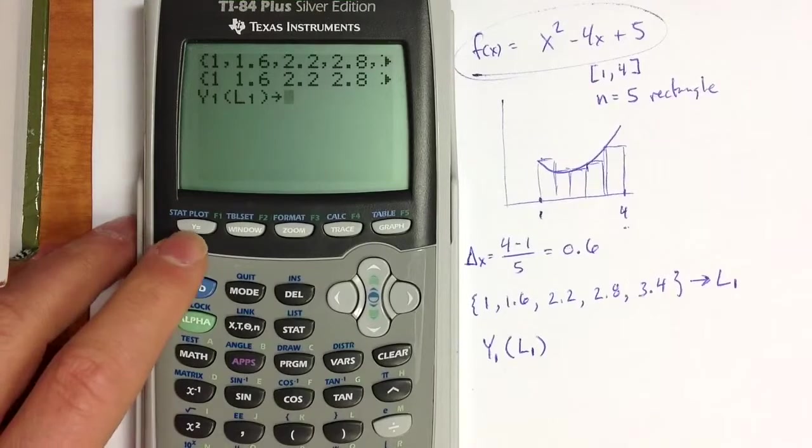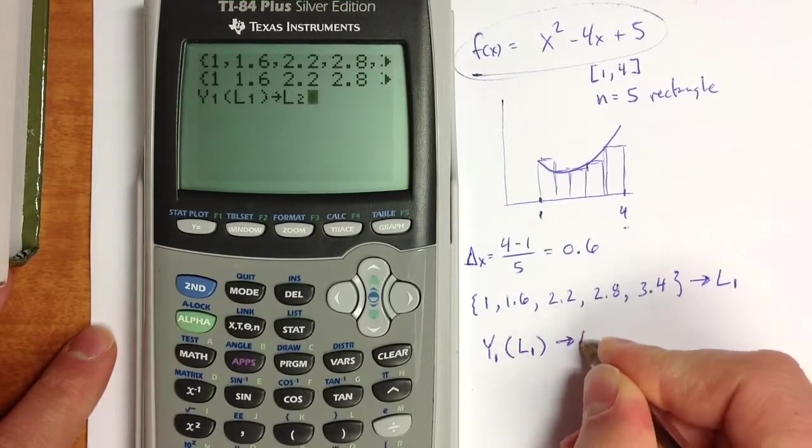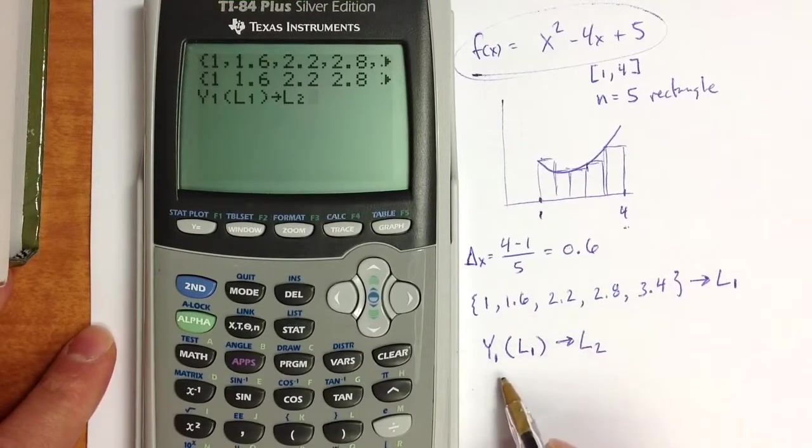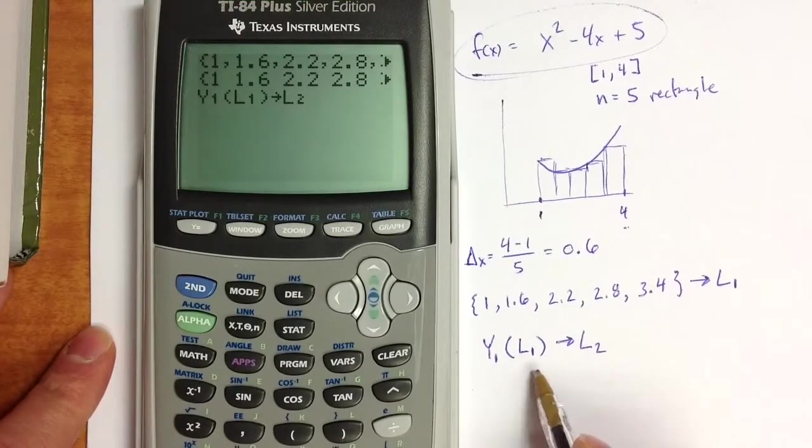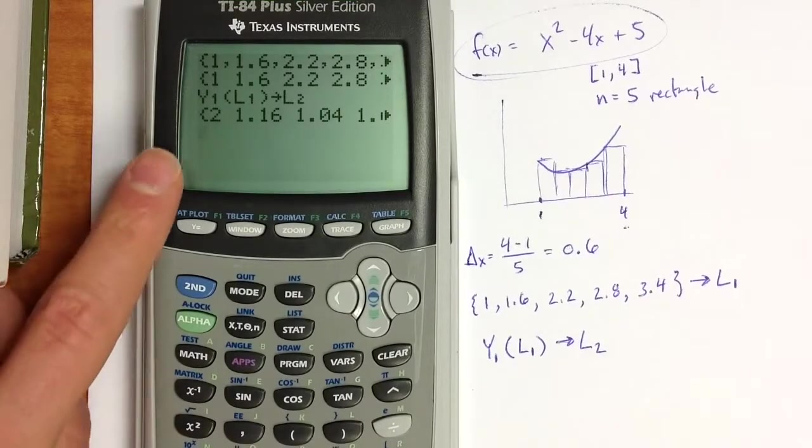And I want to store that as list 2, just to be able to recall it in a moment. So I'm going to apply y1 to list 1 and store the result in list 2. These are the heights of the rectangles.